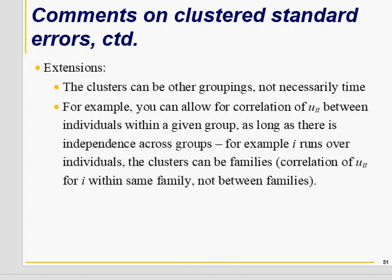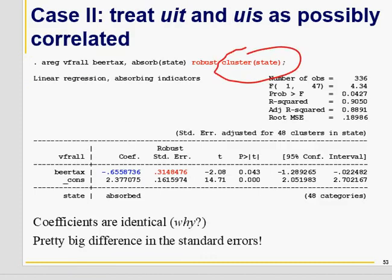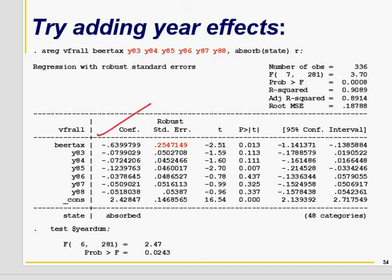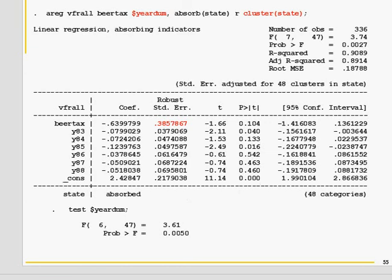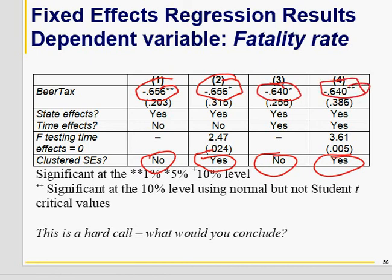We have the areg regression and we regress fatality rate on beer tax using robust standard errors: the coefficient is minus 0.65 and the standard error is 0.20. But when we use robust and clustered standard errors, the coefficient remains the same but the standard error is different. The slope coefficient is the same but the standard error is 0.25 without clustering and 0.38 with clustering. In models using clustered standard errors versus those not using them, the level of significance changes — this matters because using incorrect standard errors can change your conclusions.